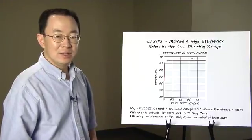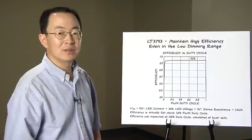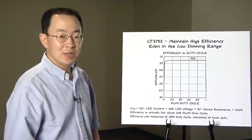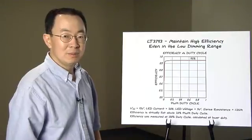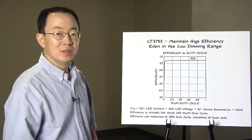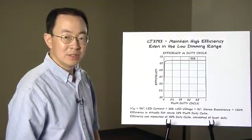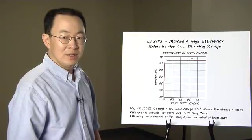Now you see that the LT3743 is a unique solution for high current LED drivers. It drives 20 amps to 40 amps LED and it can change between any current within several microseconds. And it's high efficiency well into low PWM dimming range. The LT3743 is the driver to go.